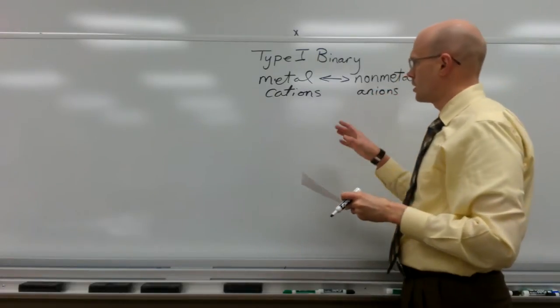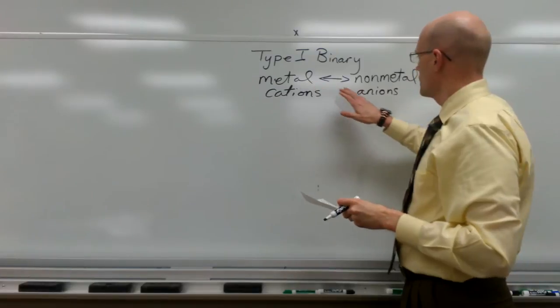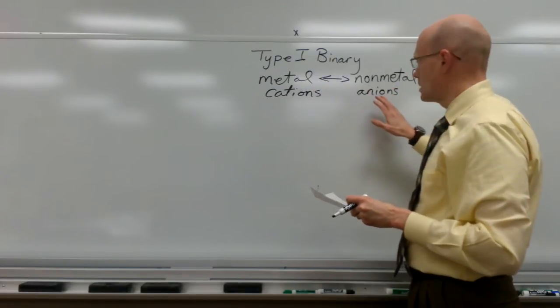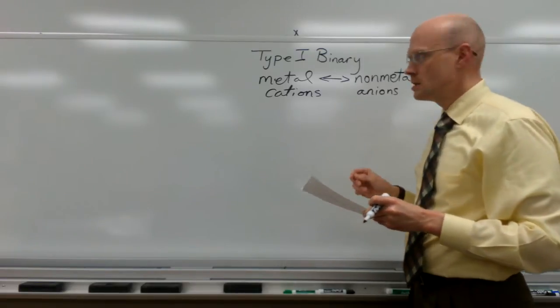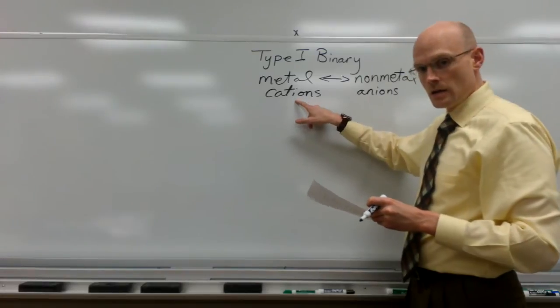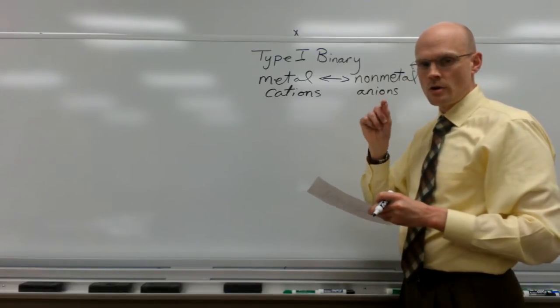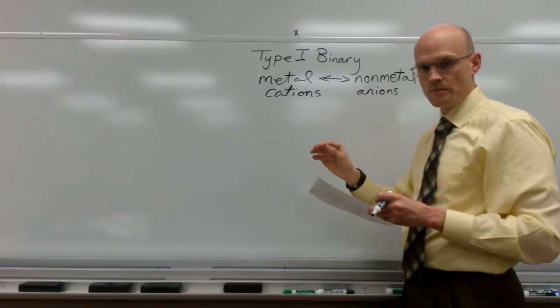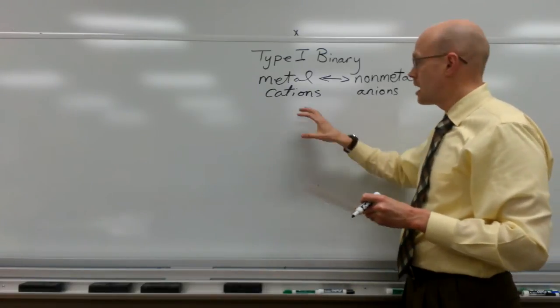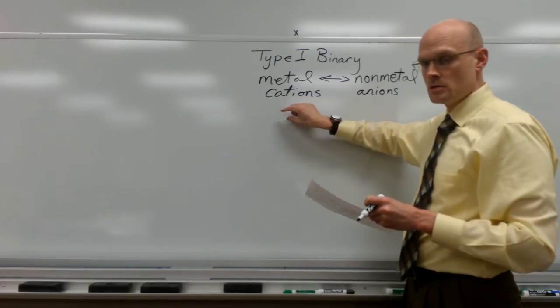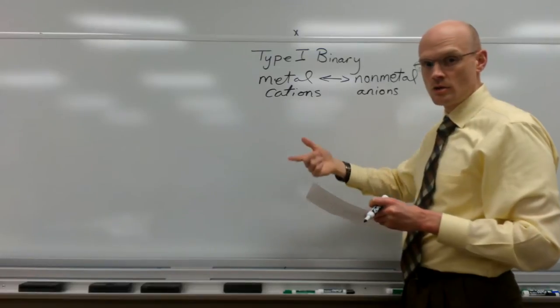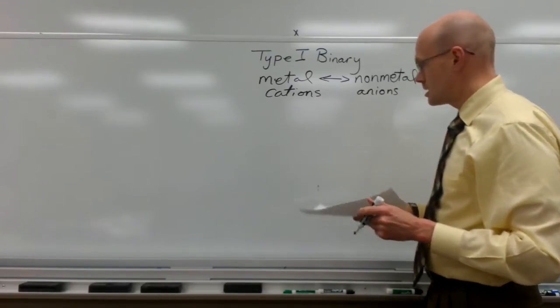So a Type 1 Binary, we're looking for a metal element with a nonmetal element. A cation with an anion. And the key to this is that the metal, its ion, its cation, has only one charge all of the time. So it is not a transitional metal. It is not one of those metals that has cations of various charges. Here's an example.